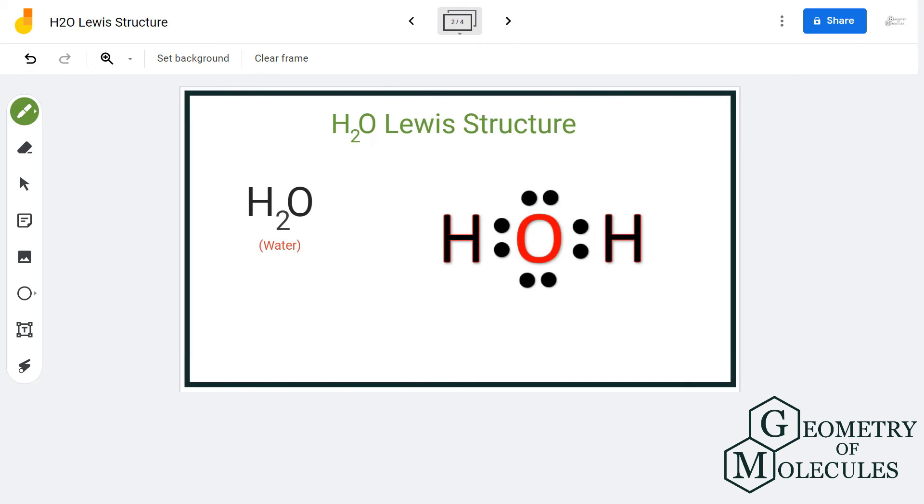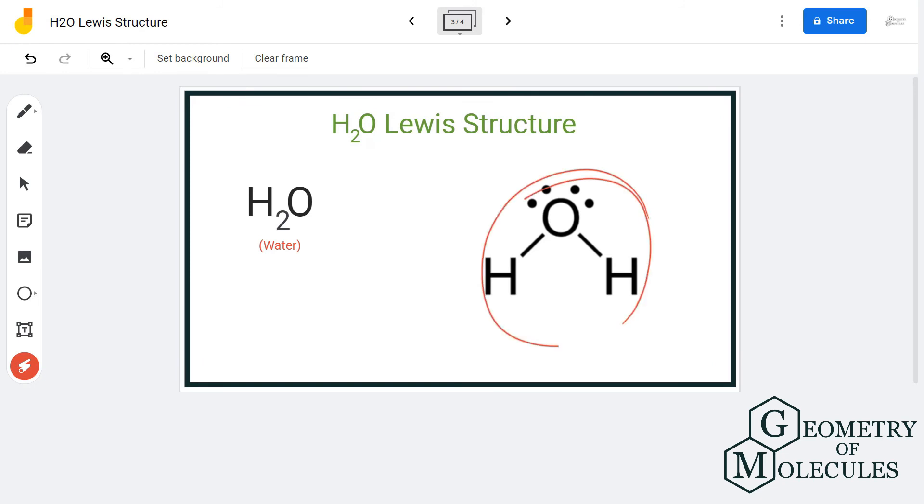So this is the Lewis structure for H2O, in which there are two single bonds between hydrogen and oxygen atoms and there are two lone pairs of electrons on the oxygen atom. To conclude, we can say that in the Lewis structure of H2O molecule there are eight valence electrons, out of which four are used up to make bonds and four are lone pairs of electrons.